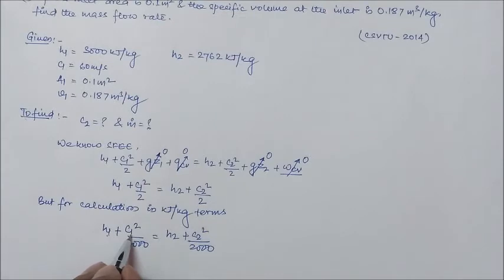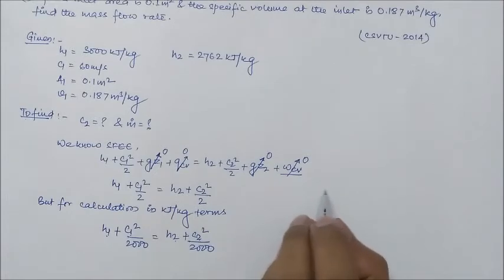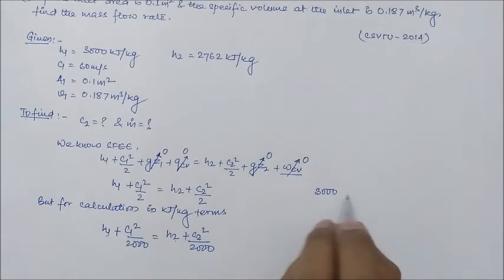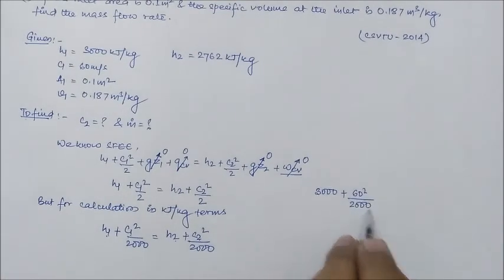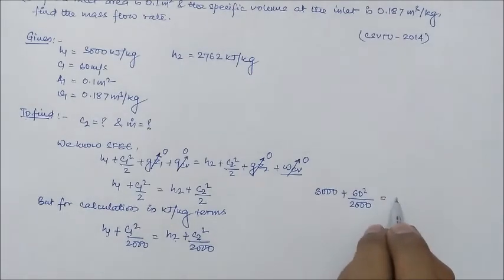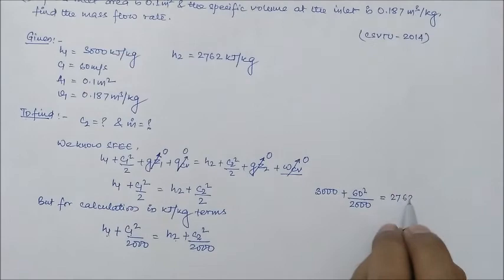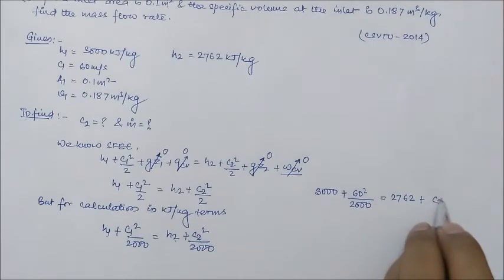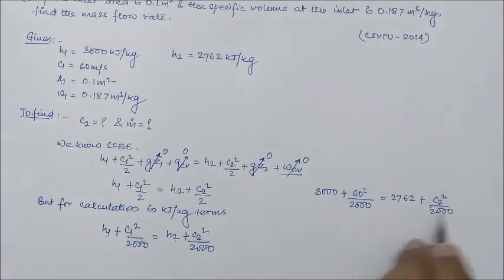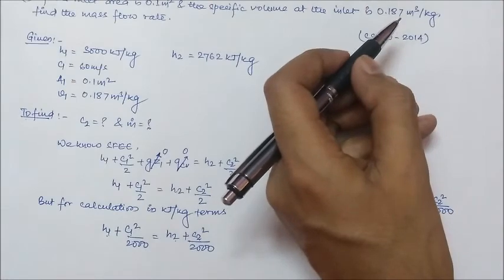Now, H1 is given, C1 is given, H2 is given and C2 is unknown. So, we have to find out C2 from here. So, we are just putting the values: 3000 plus 60 square by 2,000 is equal to 2762 plus C2 by 2,000. So, how we have converted this into kilojoule per kg term, C1 square by 2,000.